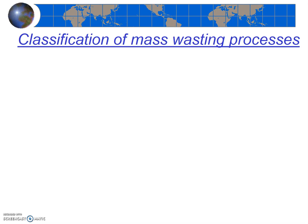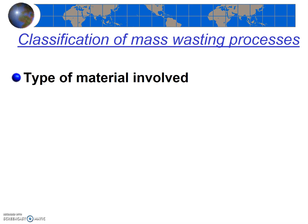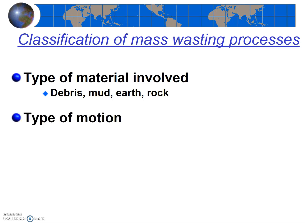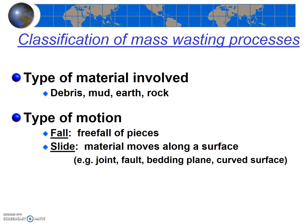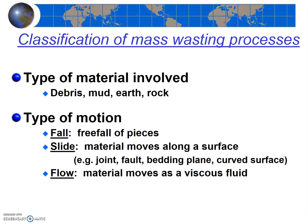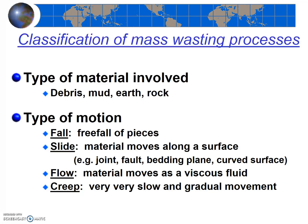We use two criteria to classify mass wasting events. First, the type of material that's involved — like rock, earth, mud, or debris. Then the type of motion: if it's a free fall we call it a fall; if the material moves along a surface, we call it a slide — and surfaces can include bedding planes, joints, faults, and other surfaces. A flow means the material is moving like a fluid, and creep is a very slow and gradual movement that doesn't fit into the other three categories.